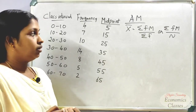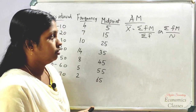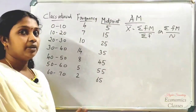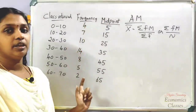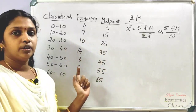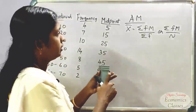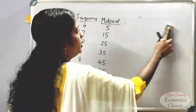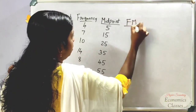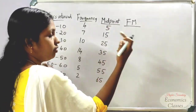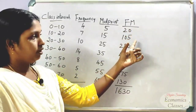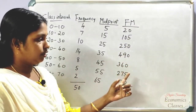Now, the numerator of the equation is Σfm. We multiply each frequency value by its corresponding midpoint. The fm values are: 20, 105, 250, 490, 360, 275, and 130.